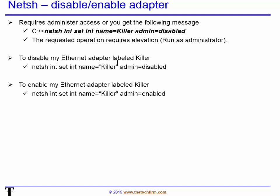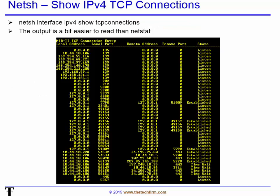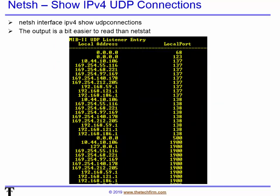If you want to enable the Ethernet adapter, simply change 'admin equals disabled' to 'admin equals enabled' and that turns it back on. Now, if you're familiar with NETSTAT output — which shows what you're talking to, protocols, port numbers — but don't like its formatting, you can use this alternative: netsh interface IPv4 show TCPconnections, all one word. That gives you a nicely formatted table, which is much easier on the eyes. If you want to do the same for UDP, just change TCP to UDP connections and you get the same type of output.